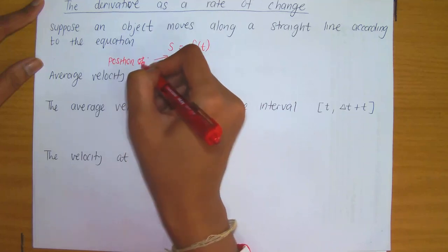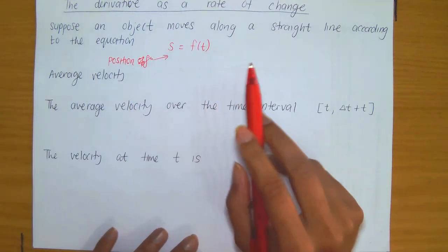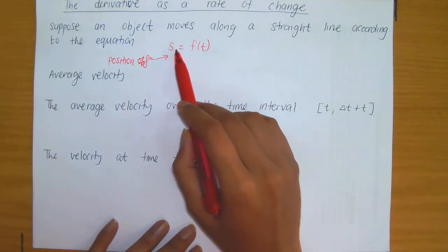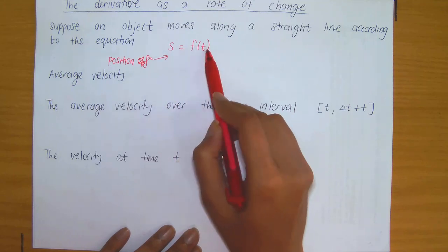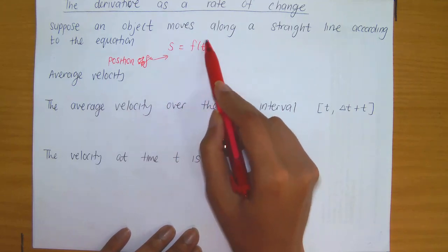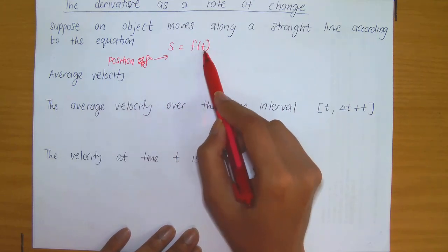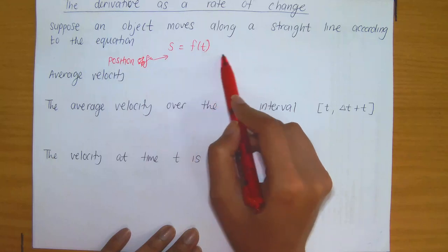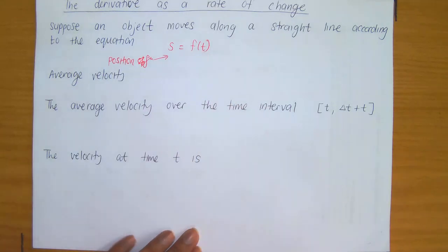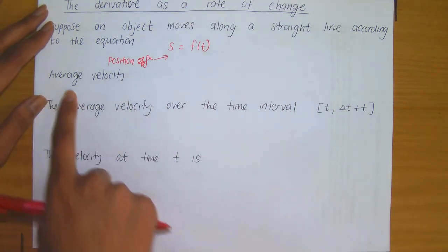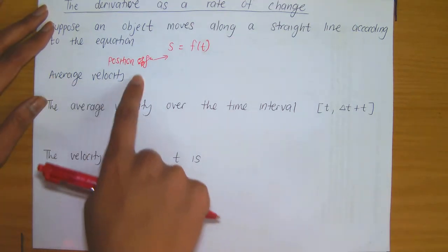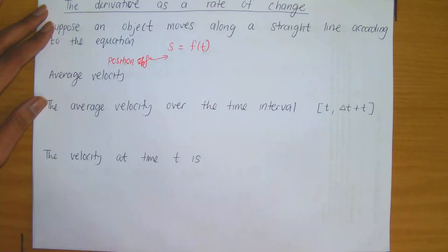So this is the position function. Here, S denotes the position of the object in meters at time t, which qualifies why the input is t. So t denotes time. Working with this position function, we can then write down a formula for average velocity.